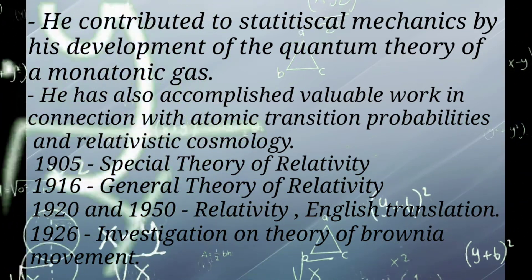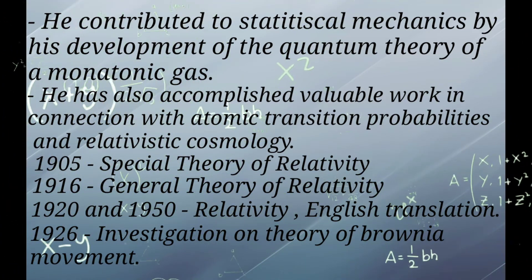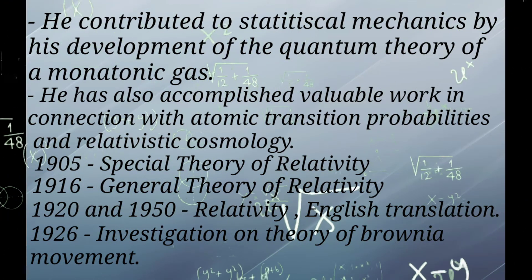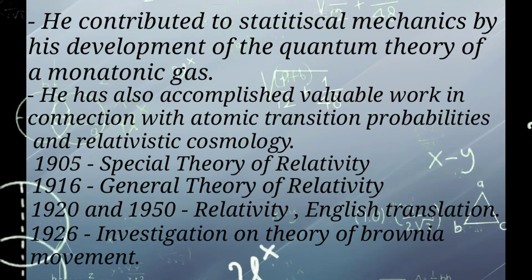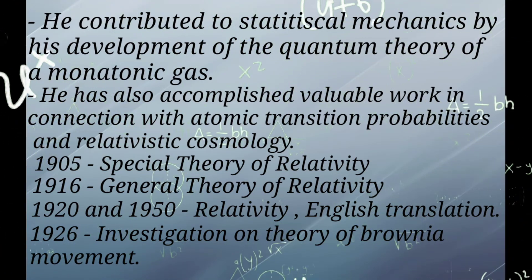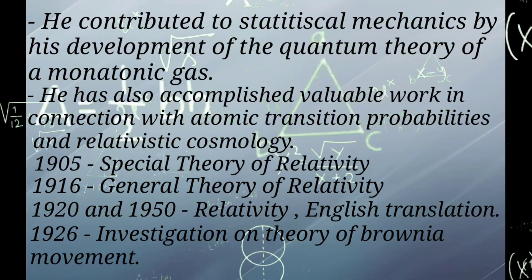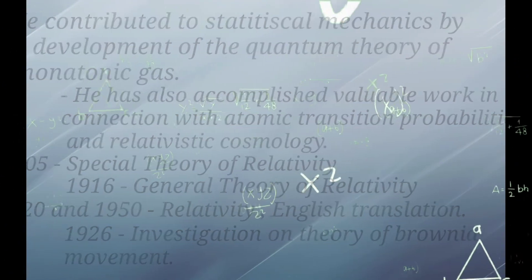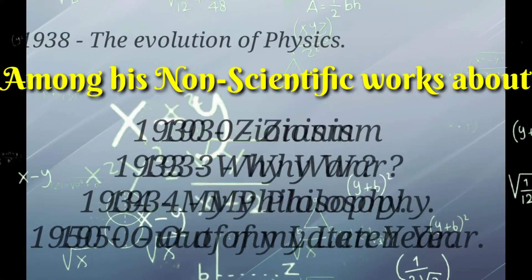In 1905, special theory of relativity. In 1916, general theory of relativity. 1920 and 1950, relativity English translations. In 1926, investigations on theory of Brownian movement. In 1938, the evolution of physics.